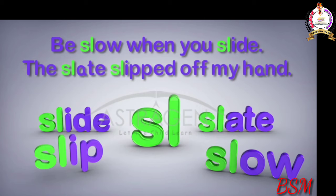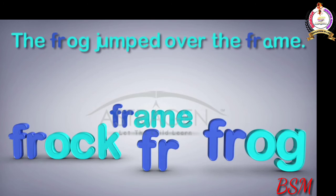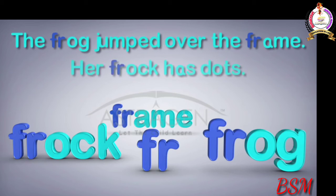Drum. A drop of water fell on the drum. She drank a glass of juice. Frog, frame. The frog jumped over the frame. Her frog has dots.